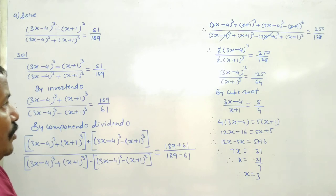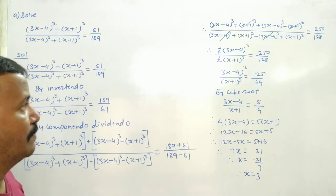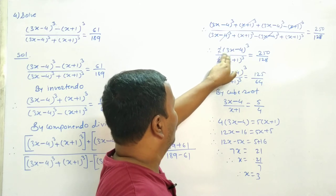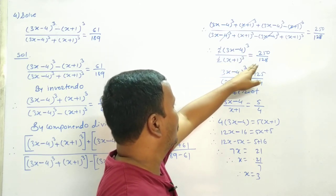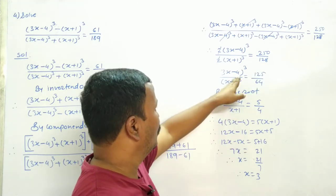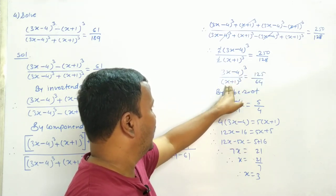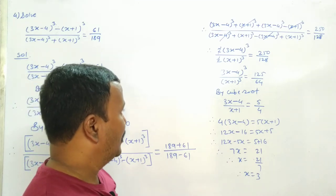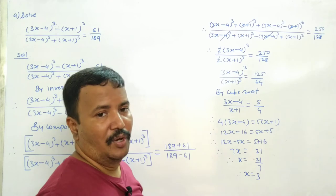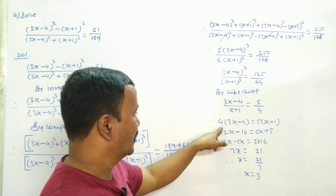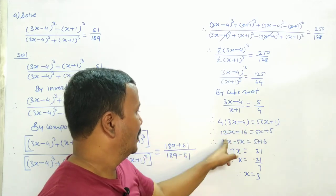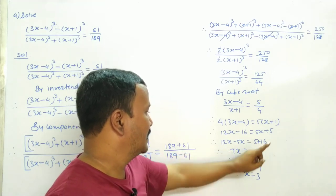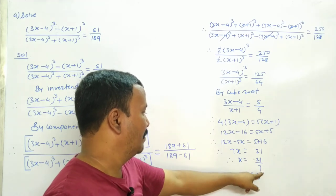After applying componendo-dividendo, we get 2 times (3x-4)³ and 2 times (x+1)³. So (3x-4)³ upon (x+1)³ equals 1 upon 64. Taking cube root: (3x-4) upon (x+1) equals 1 upon 4. Cross multiplying: 4(3x-4) = 1(x+1), giving 12x minus 16 equals x plus 1, so 12x minus 5x equals 5 plus 16, and 7x equals 21.